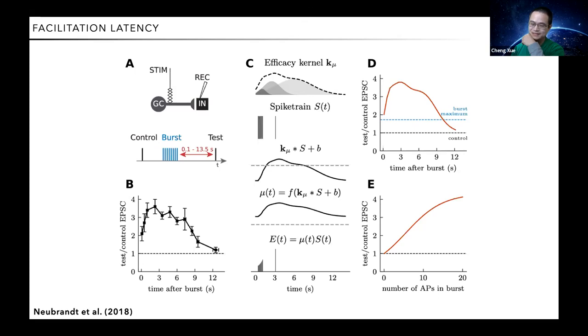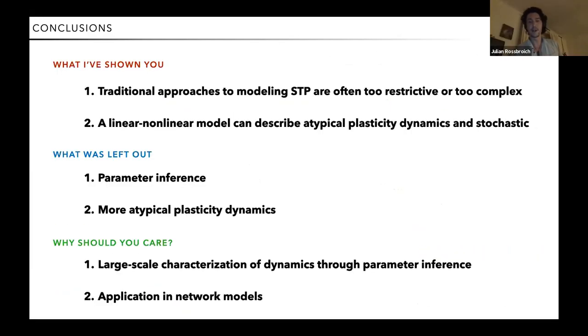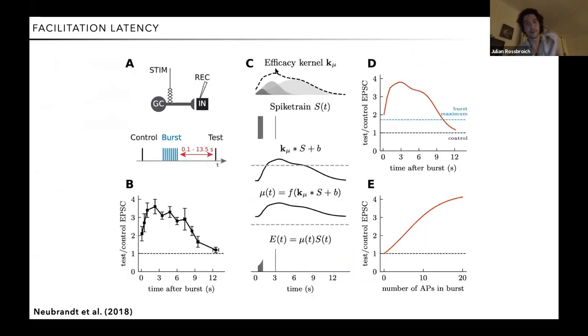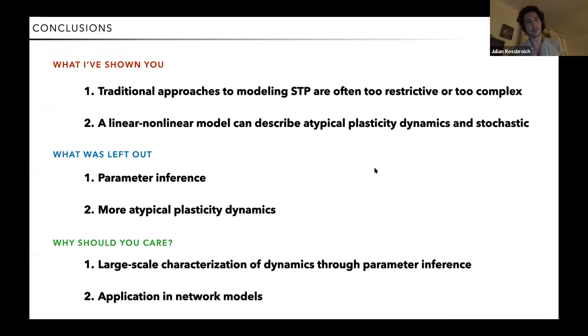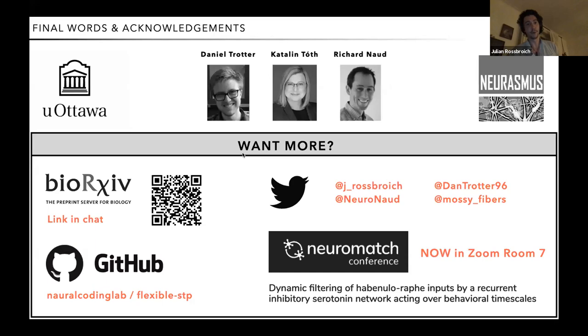We can wrap it up in one or two sentences. Well, essentially, by varying the kernel and the baseline, we have a very flexible model here that we can use to describe a lot of these atypical dynamics. What I left out is that we have a method to infer parameters from experimental data and some more atypical plasticity dynamics in the paper. So if you want more, the preprint link is in the chat. All the code is on GitHub. Please play around with it. Hit us up on Twitter. And if you want a real life example of how to use this in room seven, Michael's just getting ready for his talk on the raphae nucleus. And with that, I just want to thank you and all my co-authors and especially the Neurasmus program because they funded me during my master's to do this research in Canada. Thanks. I'm sorry for going over time.